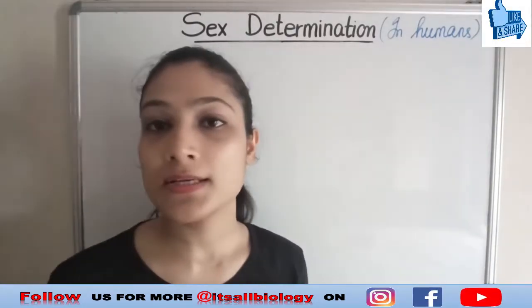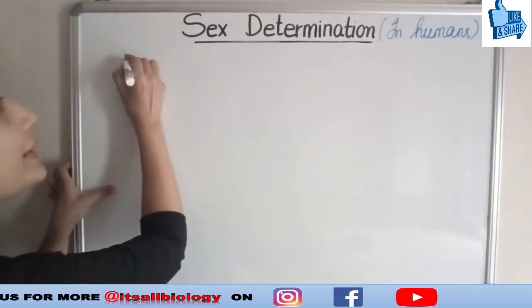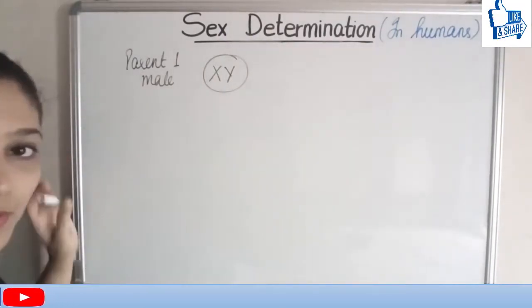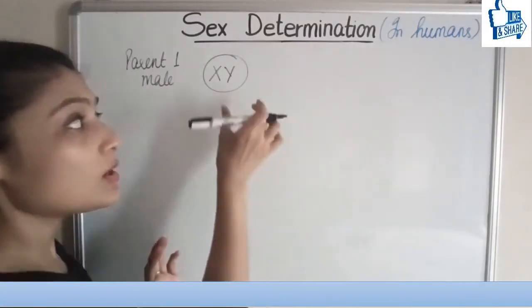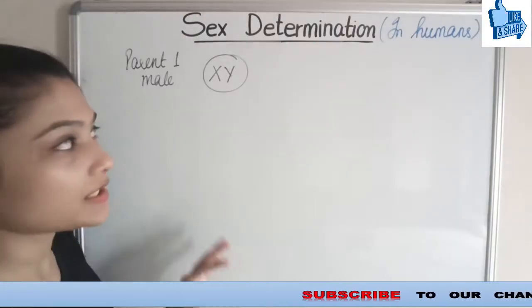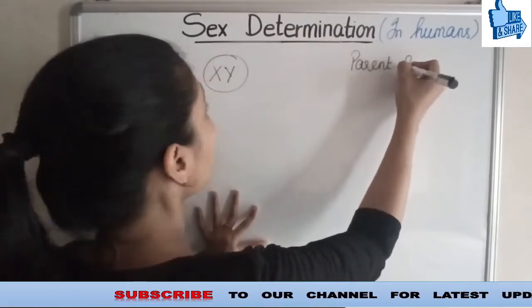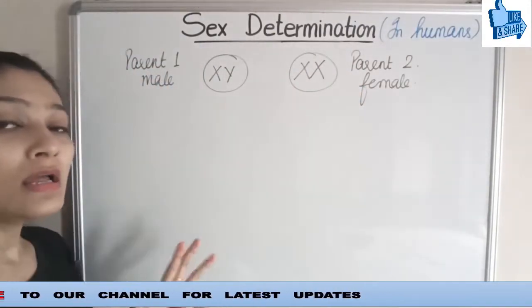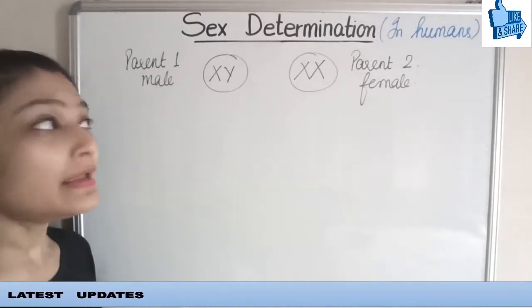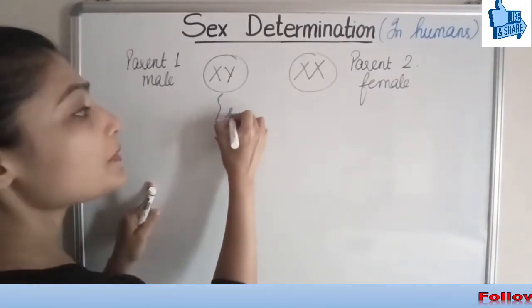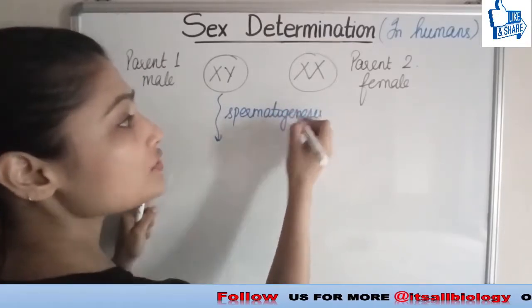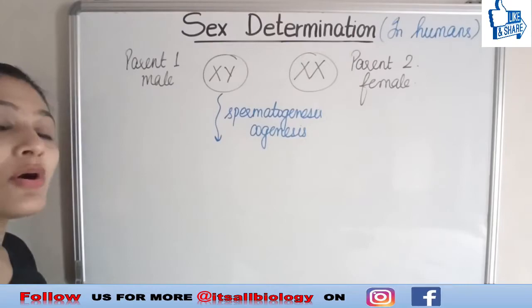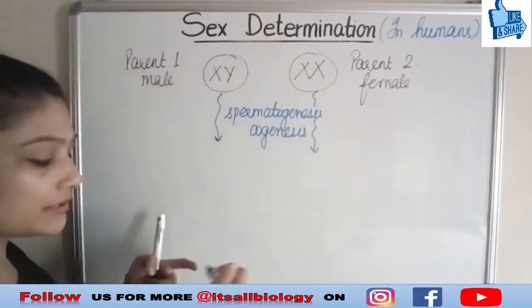Now let's take a situation to understand it better. I will be taking two parents. Parent 1, which is male, will be having XY chromosome as the 23rd pair. We are not talking about the other 22 pairs because they are the same — we are just focusing on the last pair to determine the sex of the child. Parent 2 is female, having chromosomal set XX. In a male there is a process known as spermatogenesis by which sperms are produced, and in females there is a process known as oogenesis by which eggs are formed.